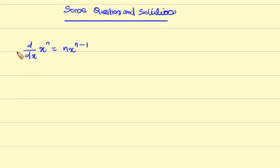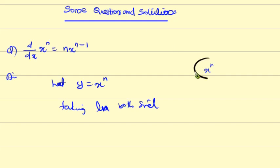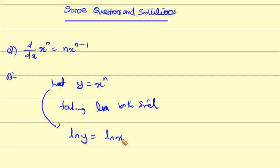Proof. Let y equal to x raise to n. Taking logarithm — ln — on both sides. That is ln y equal to ln of x raise to n, which gives ln y equal to n ln x.